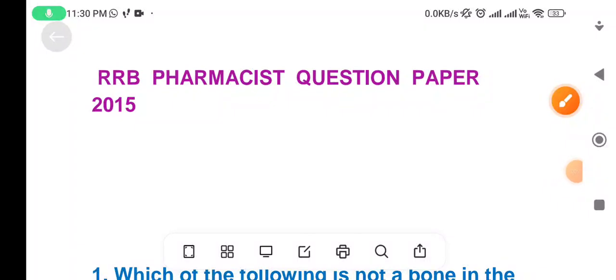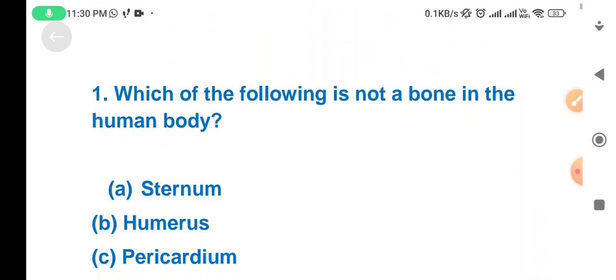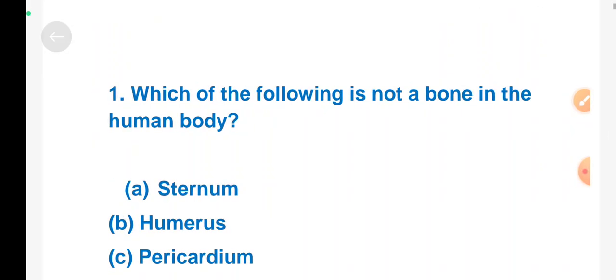Hello friends, welcome to my YouTube channel. This video lecture is based on the solution of the old Pharmacist exam paper. We solve RRB question paper 2015. Now let's start. Question number first: which of the following is not a bone in the human body?